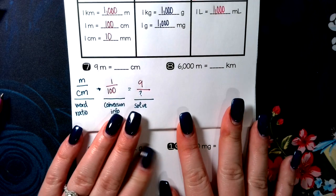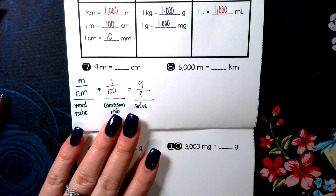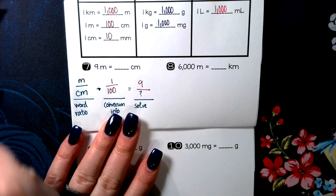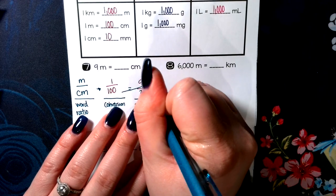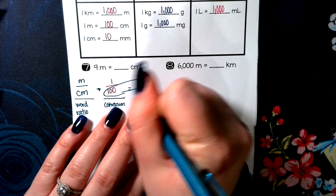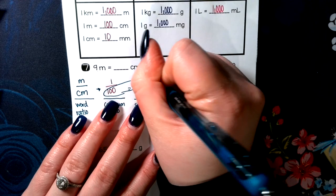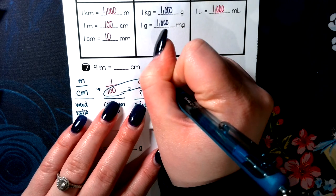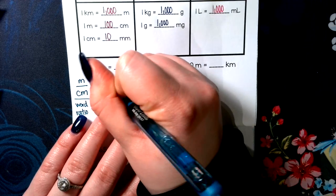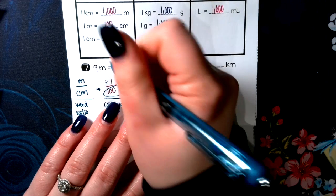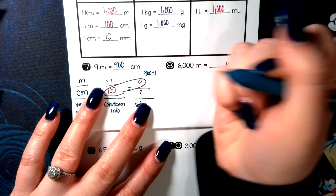Again, it doesn't matter to me which way you solve these problems, just as long as you do it. One way that I can do it is this cross multiplication. I can do nine times 100, which is 900. And then do 900 divided by one, which is going to give me 900 centimeters.